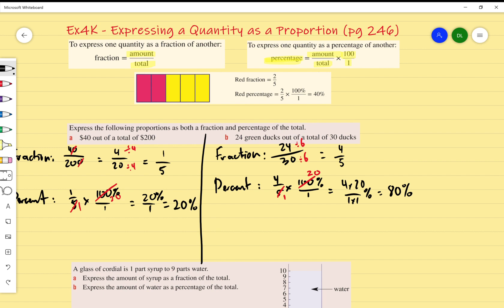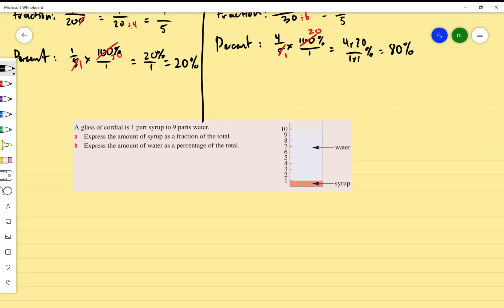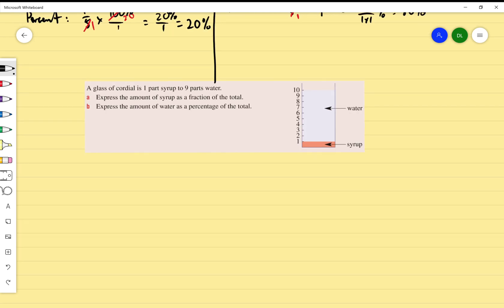Hopefully that makes sense. We'll go ahead and do a practical example. A glass of cordial is one part syrup to nine parts water.